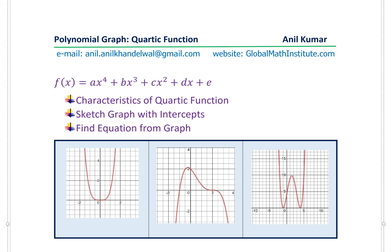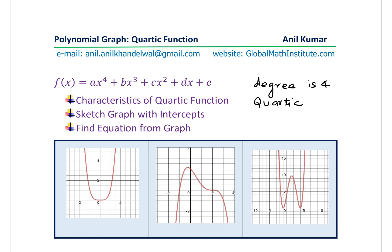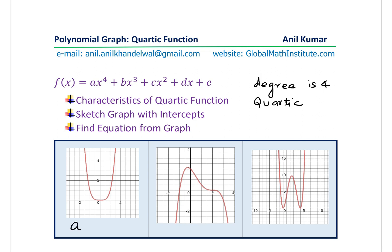As you can see from the equation itself, the degree is 4, and so it gets the name quartic. The quartic function graph could open upwards or downwards, as most polynomials do with even degree. Opening upward means the value of a is greater than zero. If it is opening downwards, the leading coefficient a is less than zero — it is negative.